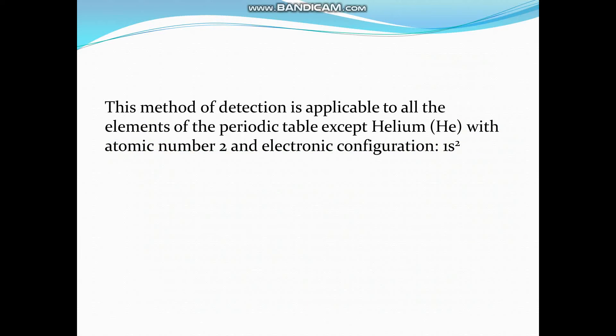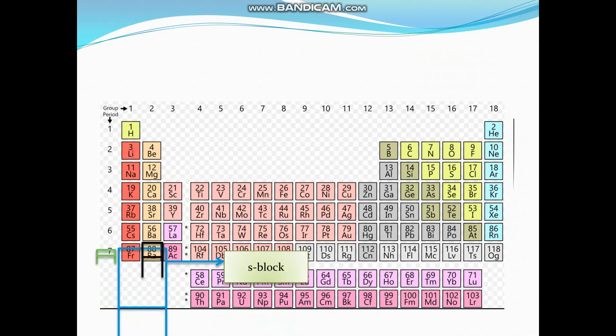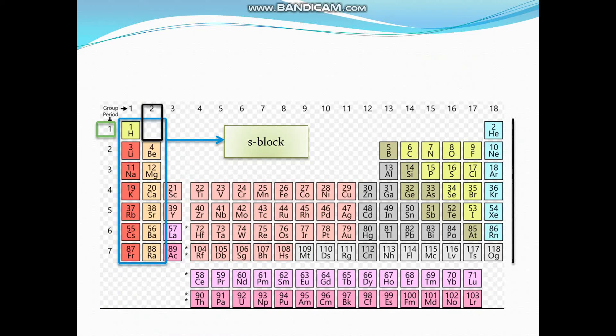This method of detection is applicable to all the elements in the periodic table except helium whose atomic number is 2 and electronic configuration is 1s2. According to the rule 1s2 means first period second element in the s block but it is placed in p block which is the only limitation of this method.